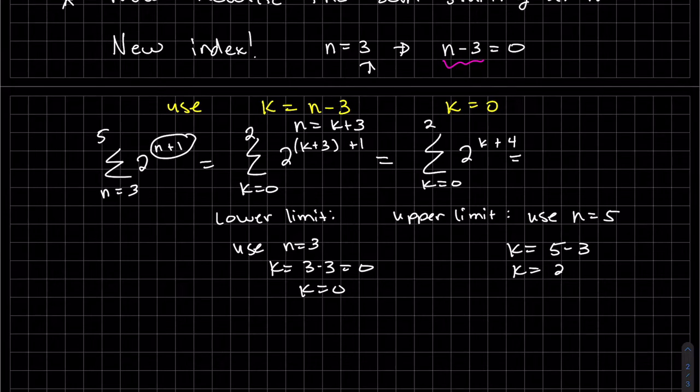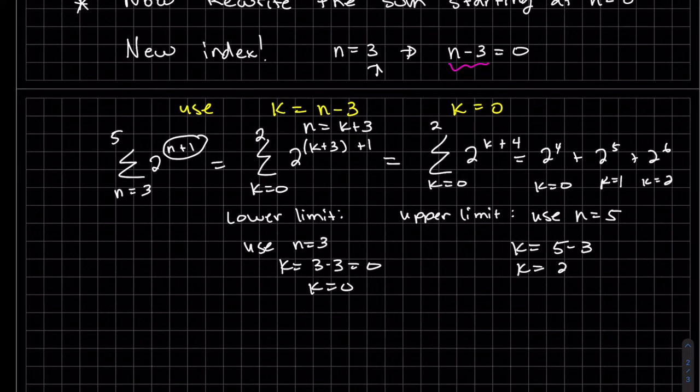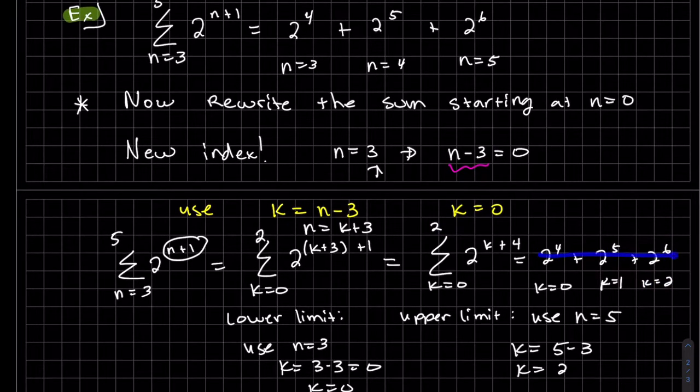Which we can see cleaning it up. And let's write that out now. Plug in zero. I get 2 to the fourth. And we go all the way up till 2. And we can see this is the same sum. I have a new counter at zero. And we've done what we've been asked.